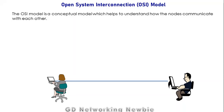Now these two computers can be just within a single room, or those computers can be thousands of miles away from each other. How this communication takes place and how they interact with each other — we have a model for that, and that model is known as Open System Interconnection. The OSI model is a conceptual model that exists just for understanding purposes — to understand how nodes communicate with each other.